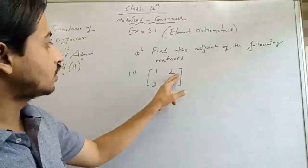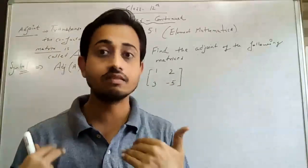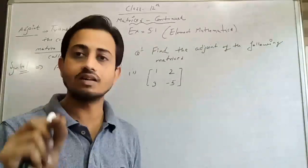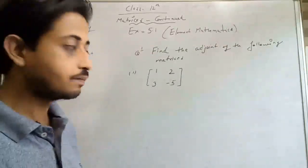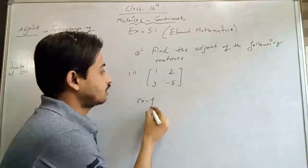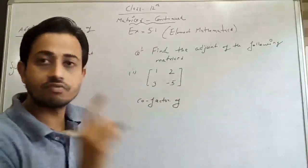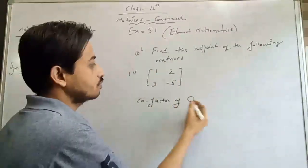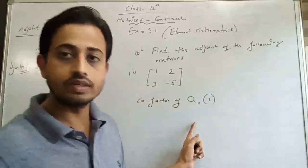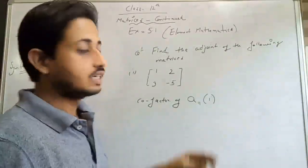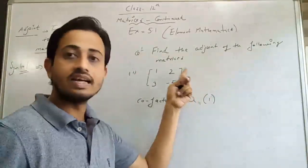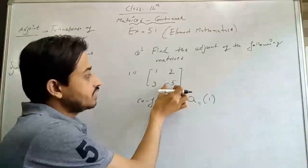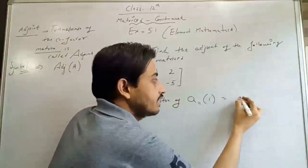Our matrix is [1, 2; 3, -5]. We have to calculate the Adjoint matrix. First we calculate the cofactor elements. Our first element is A11, meaning first row and first column. We are calculating the cofactor of element 1. You cut that row and that column — we get only -5. So the cofactor A11 is -5.